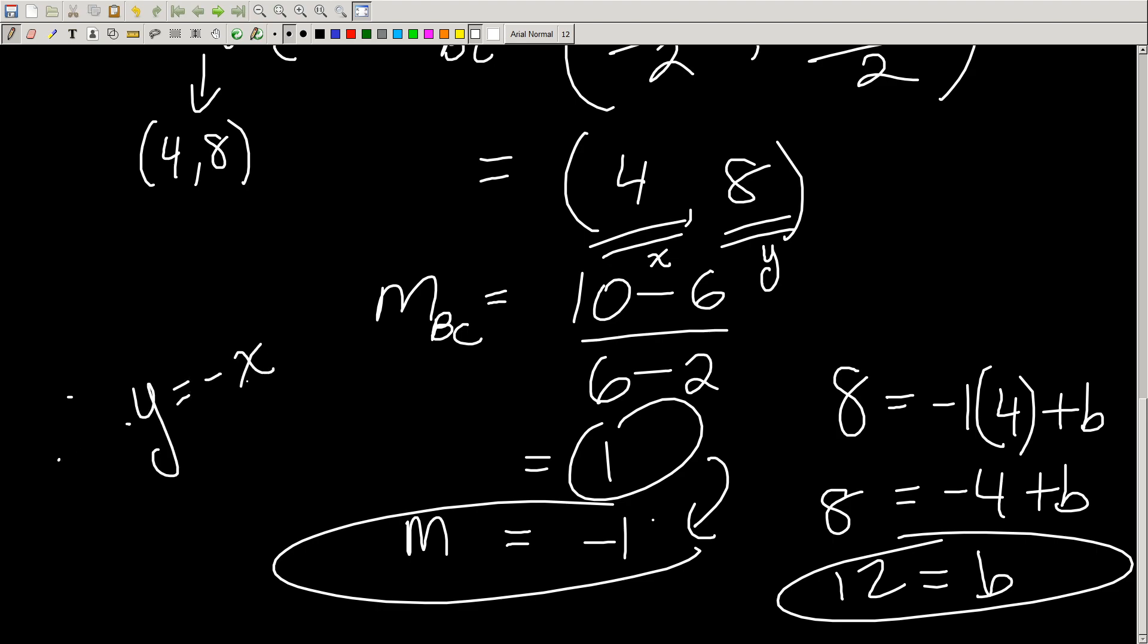B is a whopping 12. And what's my equation? y equals negative 1x, or negative x, plus 12. And there it is, the equation of the right bisector. I hope you enjoyed this video. If you did, leave a like, comment, subscribe, and I'll see you in the next one. Peace out.